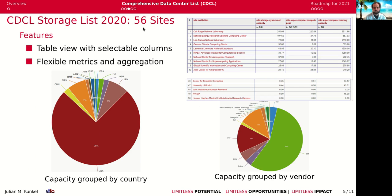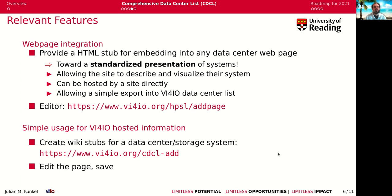Today we have 56 sites that have recorded data in the data center list. Some sites have multiple file systems, and you can explore various metrics such as capacity, grouped by country or by vendor, on the web page. All the data is available publicly.